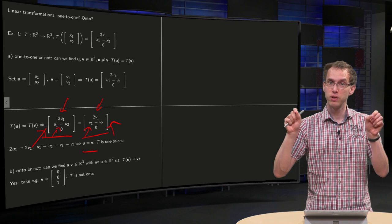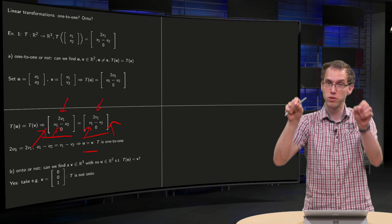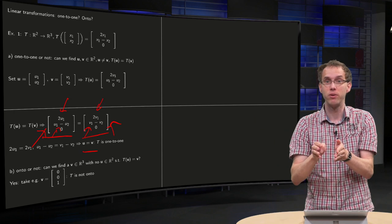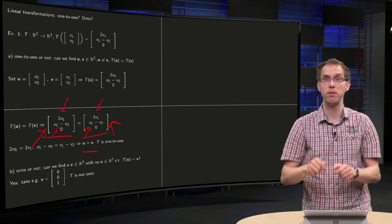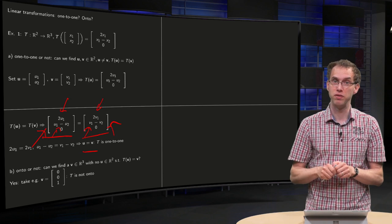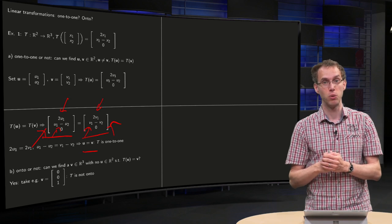So if you have T(u) equals T(v), two vectors mapping to the same point, then actually they were the same. You cannot have different vectors mapping to the same point. If T(u) equals T(v), then u has to be equal to v. Therefore, this transformation is one-to-one.